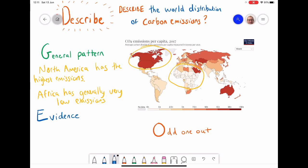To back up these patterns I found, I need evidence. I'm going to use the key and the colours in the chart. The USA, if I'm saying that North America has the highest emissions, the USA has CO2 emissions of 15 to 20 tonnes per capita. I could then find some evidence to prove my second point, saying that Africa is generally very low emissions, again using the table.